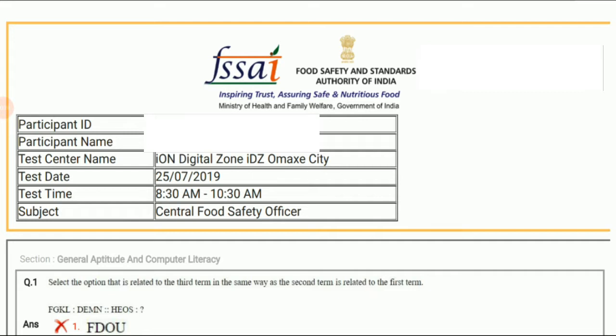This video is in continuation of the previous video where we were discussing the previous year question paper of FSSAI CFSO exam. As we have already discussed, the exam has two sections. Section 2 we already discussed in the previous video. You can find the link in the description box. In this video we will be covering section 1, which is general aptitude and computer literacy. There are total 25 questions from mental ability, general knowledge, some English questions, and basics of computer literacy.